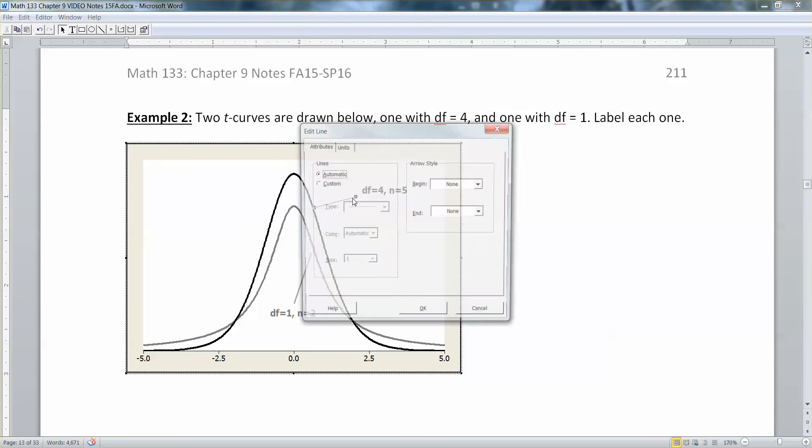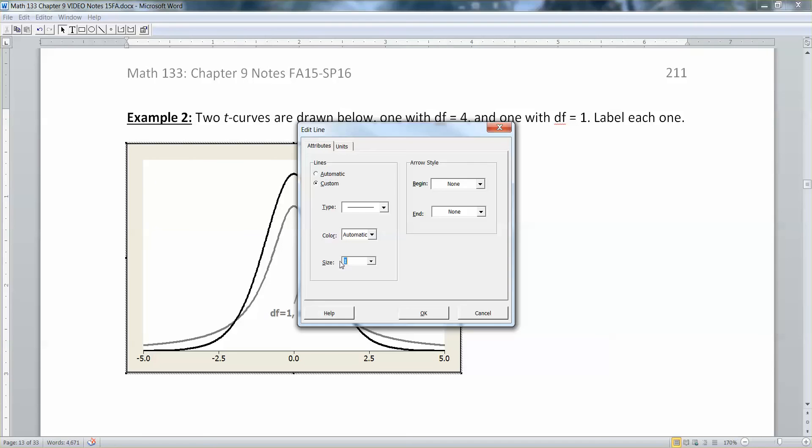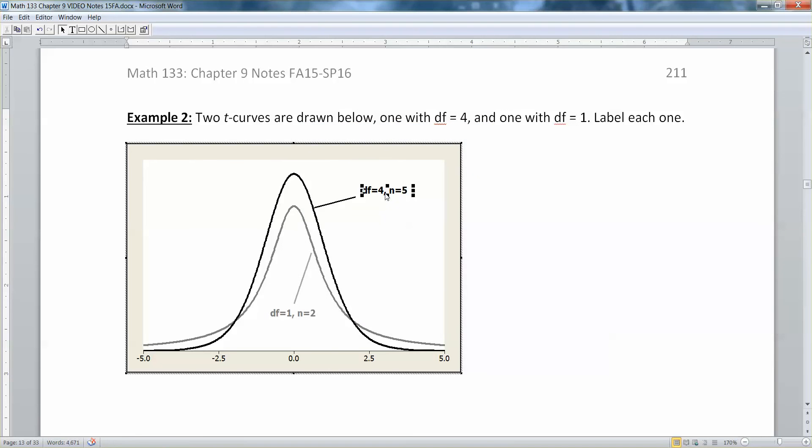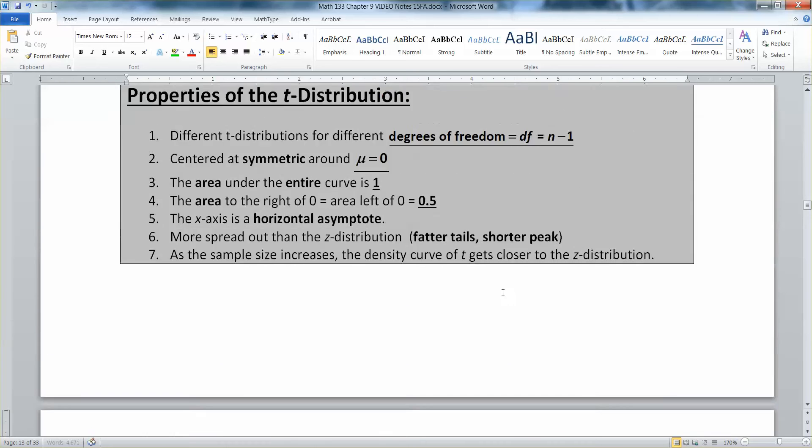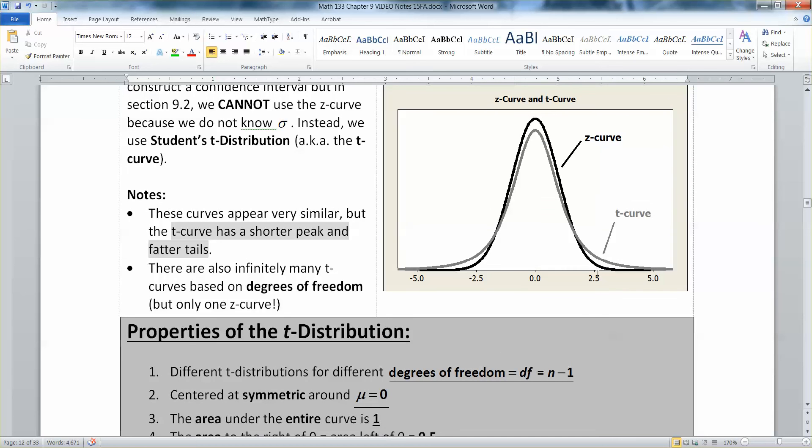We have a degrees of freedom of four, which means that our sample size must have been five. But that's a better curve. It's taller in the center, smaller in the tails. It's still not the Z curve. The Z curve, if you look at 2.5, see how fat that is at 2.5? See how high up above the axis the black curve is?